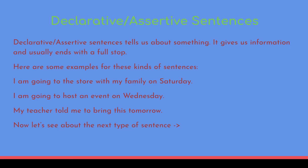The expression for a declarative sentence is plain and blank — 'I'm going to the store with my family on Saturday' — not like a question. 'I'm going to host an event on Wednesday.' You read it plainly, it's giving information. 'My teacher told me to bring this tomorrow.' So now let's see the next type of sentence.